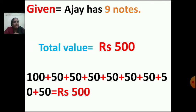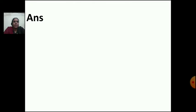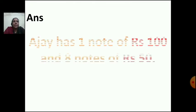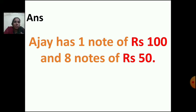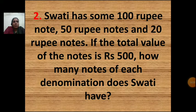So how are you going to write the answer now? Ajay has 1 note of rupees 100 and 8 notes of rupees 50. That makes rupees 500. So this is how you have to do the sum. Now let us do the second sum.